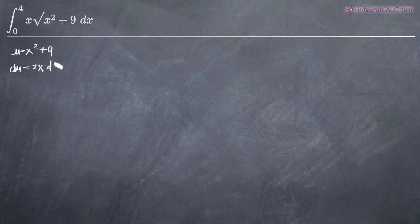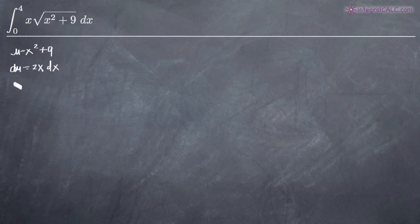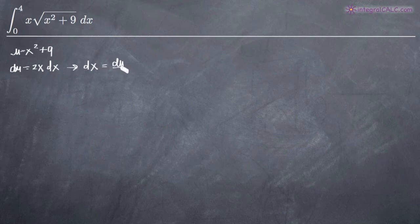We go ahead and add dx to this because we just took the derivative, so we have to add dx. Then we're going to divide both sides by 2x because we want to solve for dx. Doing that, we get that dx is equal to du over 2x.